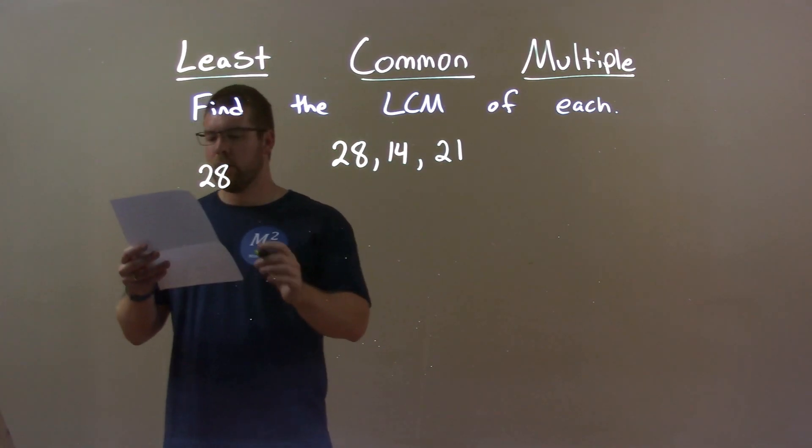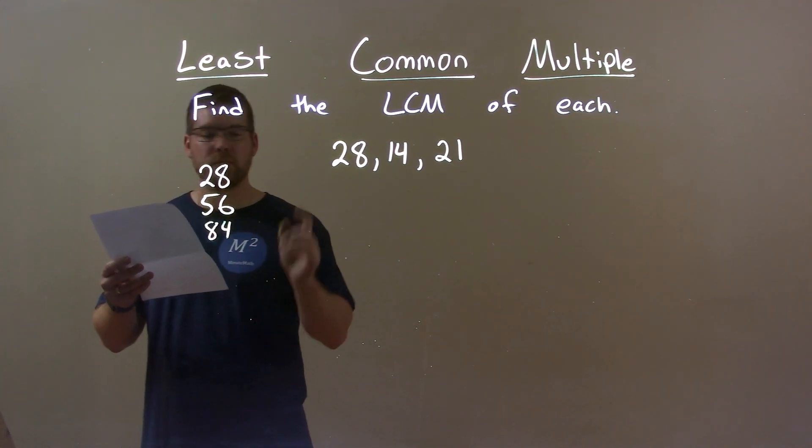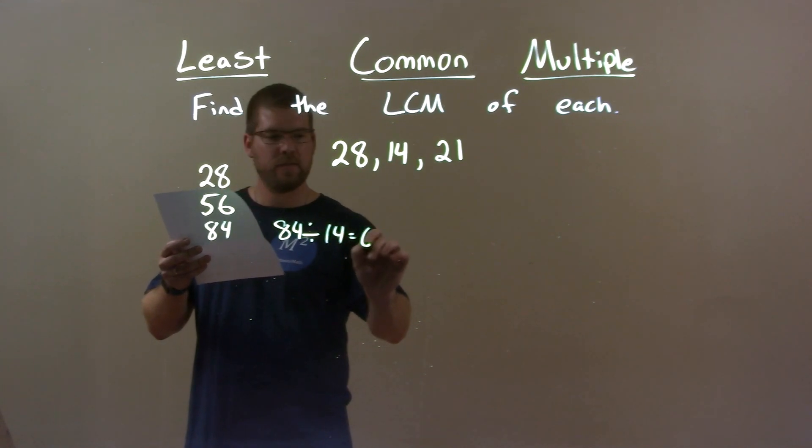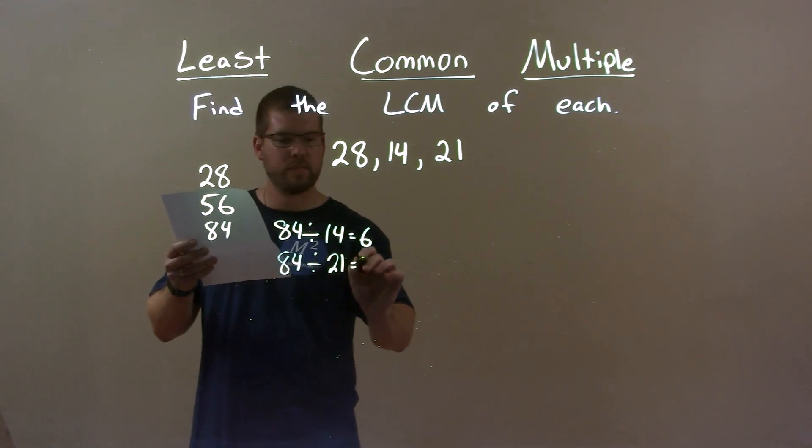Well, 28 is not divisible by both, neither is 56, but 84 is. 84 divided by 14 is 6, and 84 divided by 21 is 4.